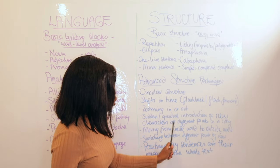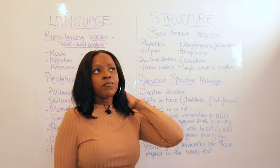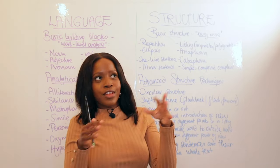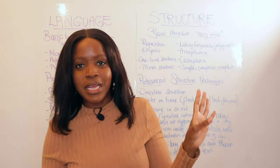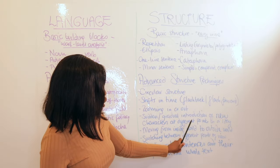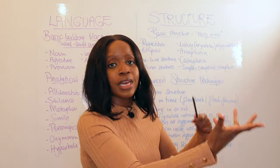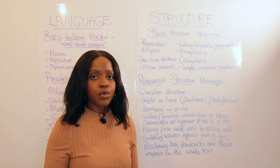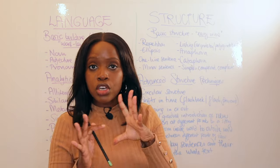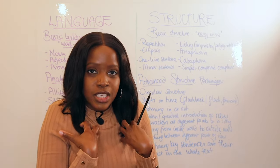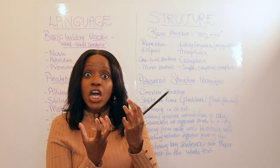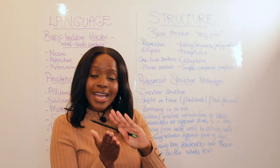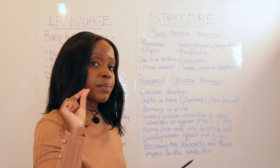Another advanced technique is the sudden or gradual introduction of new characters at different points in a story — for example, a story describing a house in detail, then suddenly a dog appears and we follow it through the house. Also the shift from the inside world to the outside world: maybe the narrator describes their feelings, then dialogue occurs, and the outside world impacts the narrator — that's a shift from inside to outside.